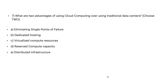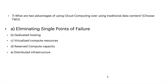The next question: what are two advantages of using cloud computing over using traditional data centers? Choose two. A: eliminating single point of failure, B: dedicated hosting, C: virtualized compute resources, D: reserved compute capacity, or E: distributed infrastructure. The right answers are A: eliminating single point of failure, and E: distributed infrastructure.